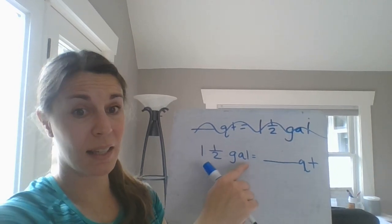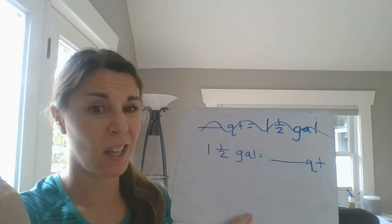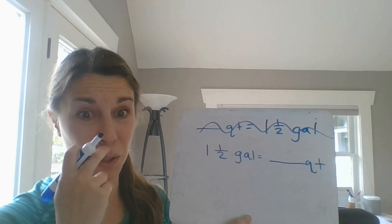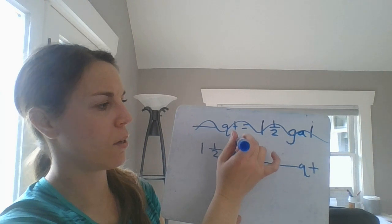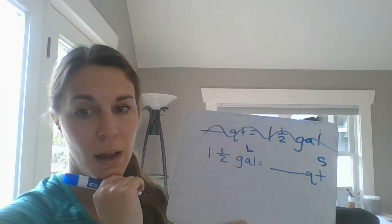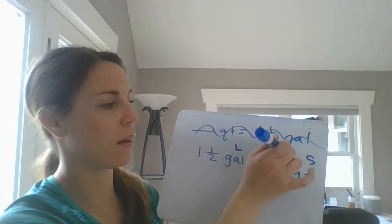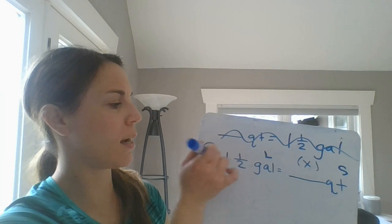Now if I'm going gallons to quarts, which most of you know, gallon is our largest unit. So the only place we can really go is to a smaller unit, right? So I'm going to go larger to smaller. And how am I going to code that? Yeah. Multiply. You guys are getting so good at that. So bam, step one, done.